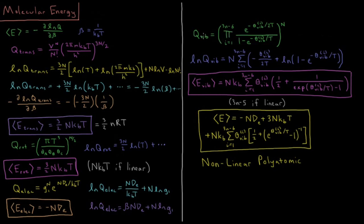Now for the vibrational partition function, which is a product over all vibrational modes — 3n−6 for a general nonlinear polyatomic, 3n−5 for linear. For each mode i, the factor is e^(−θ_vib,i / 2T) / (1 − e^(−θ_vib,i / T)), all raised to the power n. The natural log is n times the sum over modes of [−θ_vib,i / 2T + ln(1 − e^(−θ_vib,i / T))]. These vibrational temperatures can typically be looked up in tables for simple polyatomic molecules.